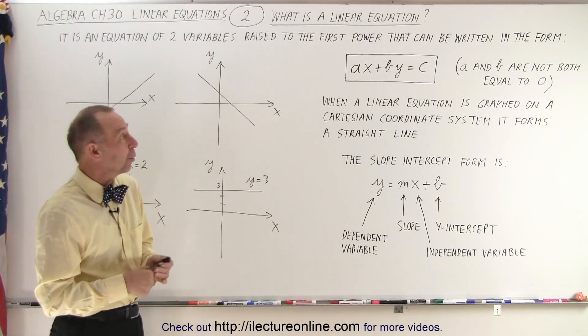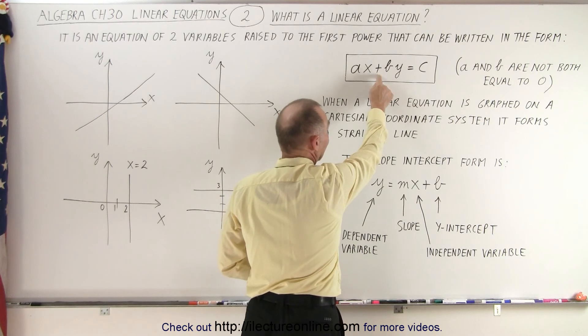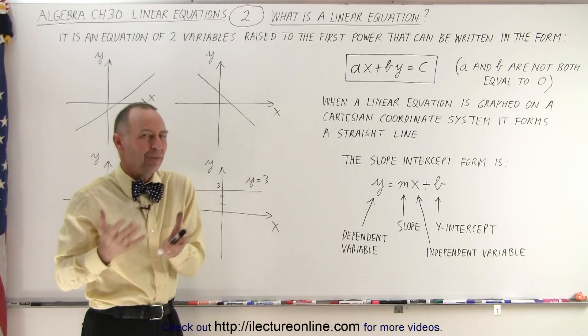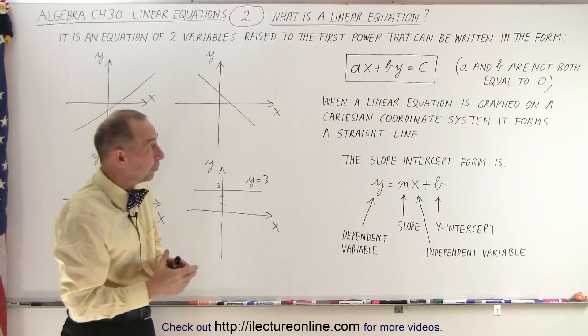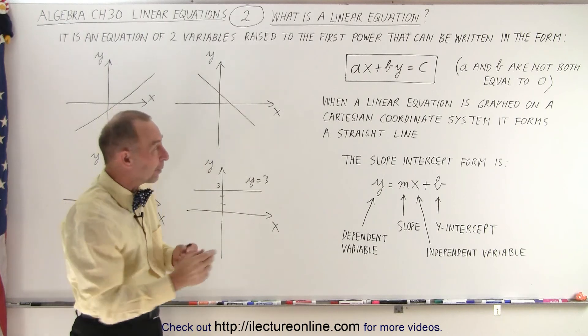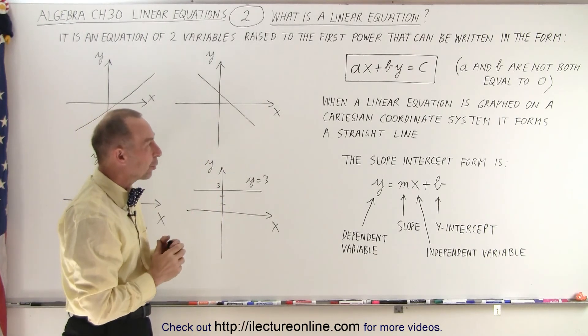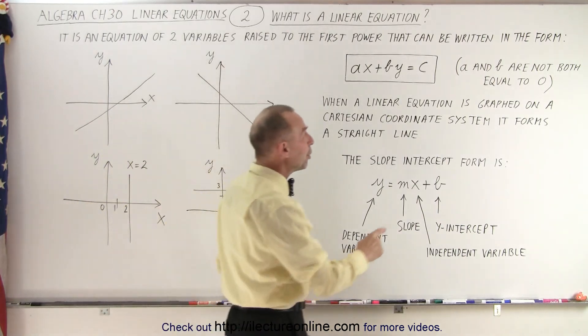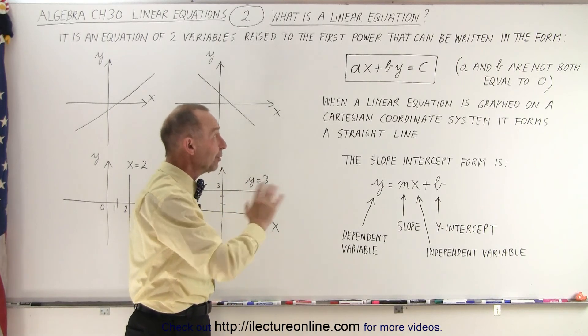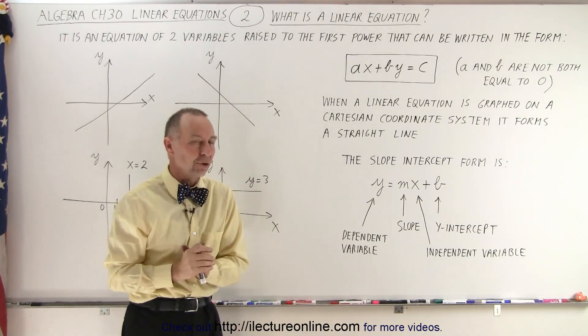In addition to that, we should be able to write the equation in this form right here. The variables, in this case x and y, though they could be any two variables, need to fit into this particular form of the equation, and both a and b cannot be zero at the same time. If both a and b are zero, then we have zero equals a constant, and that is not a linear equation.